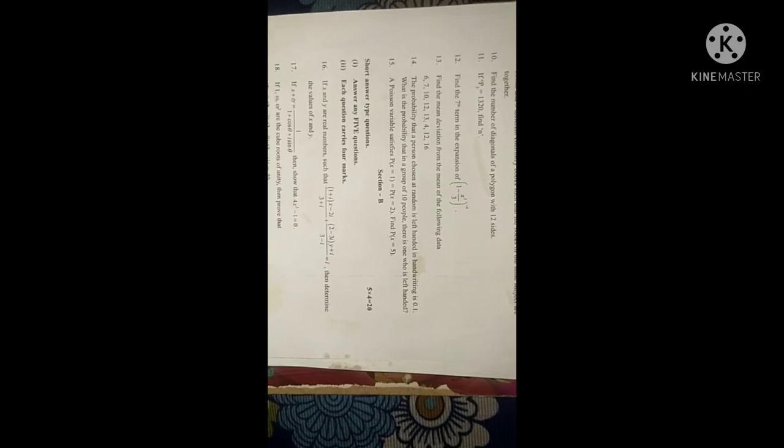Fifteenth: A Poisson variable satisfies P(X = 1) = P(X = 2), find P(X = 5). So 15 questions, in this 15 if you write only 10, that's enough. If you know more than 10 also please write. After all, writing 4 and 7 mark questions with choice, if you write extra, that will give good appearance.